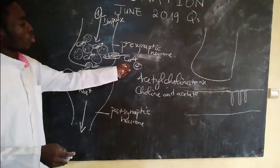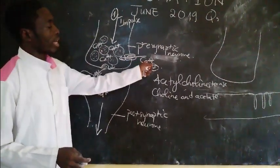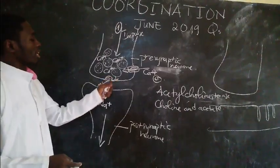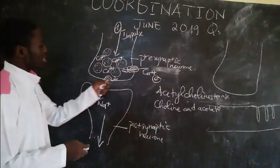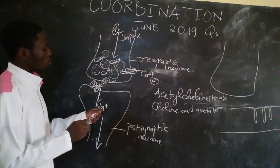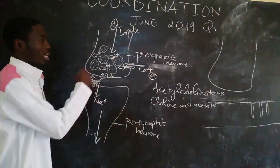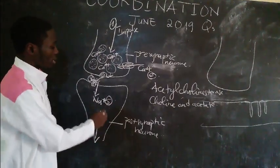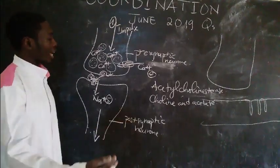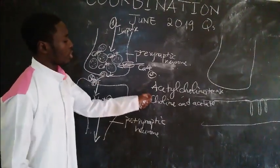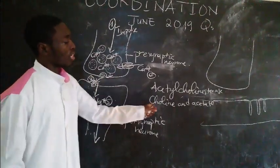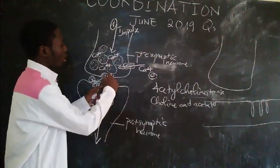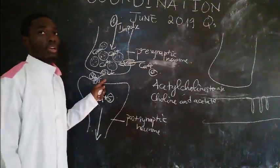To summarize: Stage 1 — arrival of the impulse. Stage 2 — opening of voltage-gated calcium channels, allowing Ca2+ influx. Stage 3 — Ca2+ causes vesicles to bind to the presynaptic membrane and release their contents via exocytosis. Stage 4 — neurotransmitter diffuses across and binds to receptors. Stage 5 — Na+ influx through ligand-gated sodium channels causes depolarization and transmission of the impulse. Finally, acetylcholinesterase hydrolyzes acetylcholine; products are recycled or destroyed.